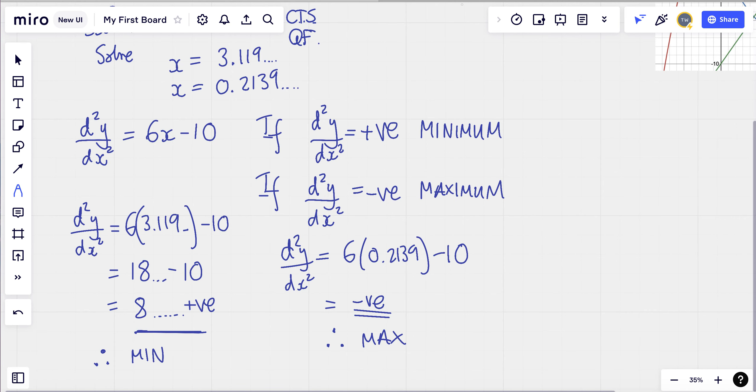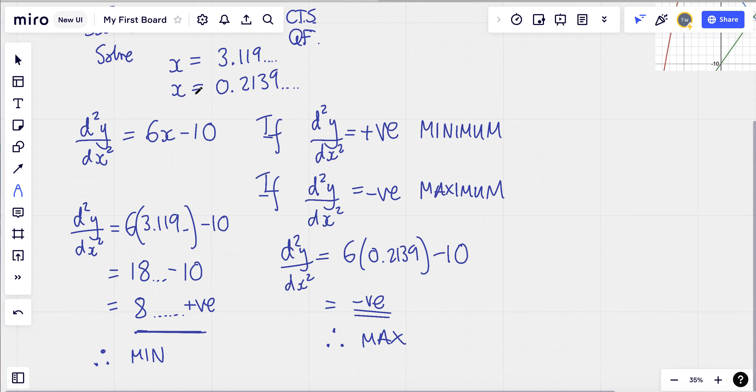Now, the last thing that might happen is that if you put in one of these values and you get 0, so if you get d²y/dx² and that gives you 0, then don't panic. You may have stumbled across a point of inflection. And the best thing to do here is to check with values either side of it to see if it is a point of inflection. If you find one, it's very exciting. You actually get a special prize from the Institute of Maths. It's a bit like finding a rare Pokemon.